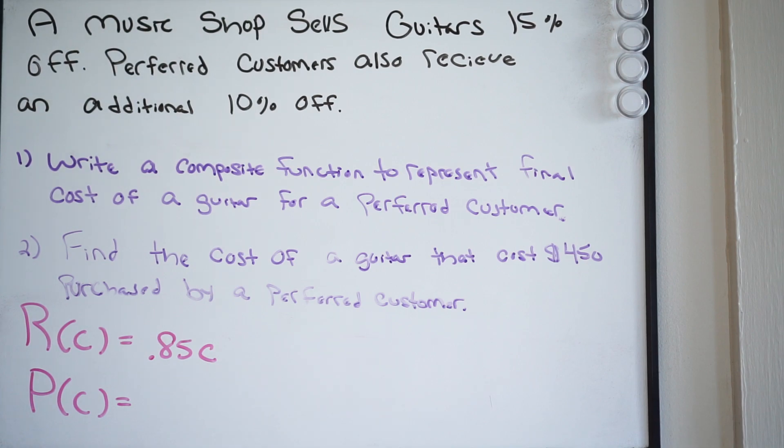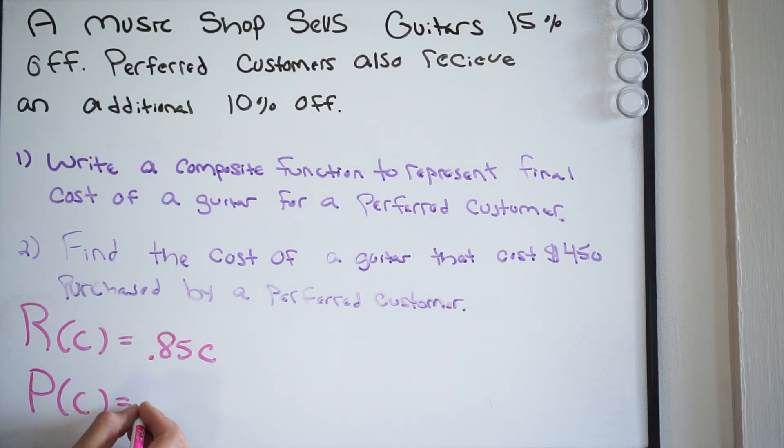So again, start at 1.0 and you want to do a 10% discount. So 1.0 minus 0.1 is going to give you 0.90 C.